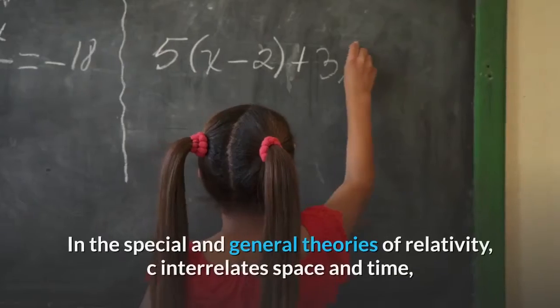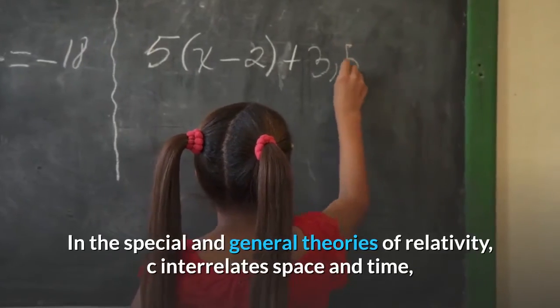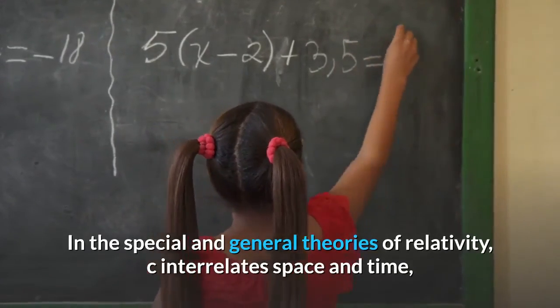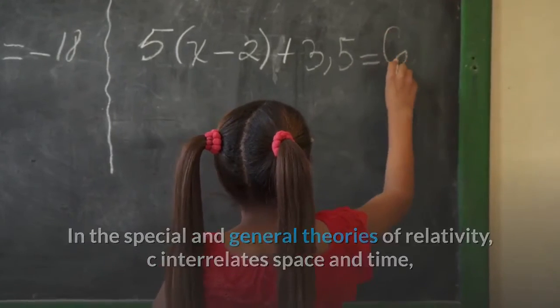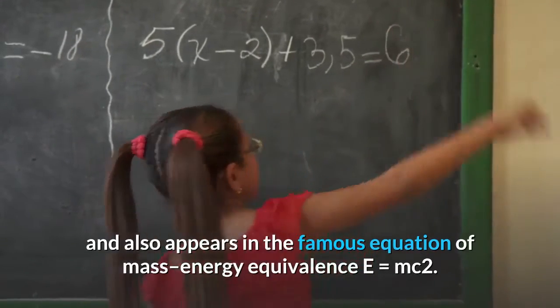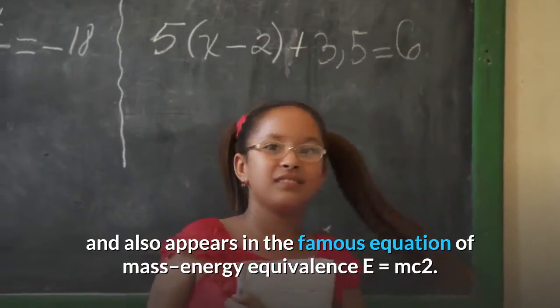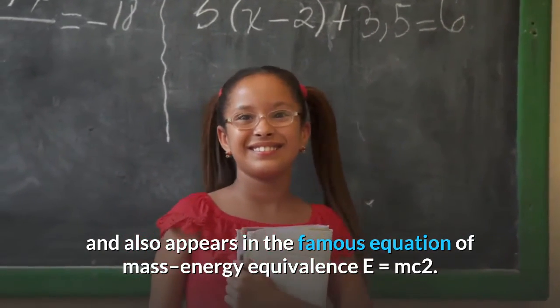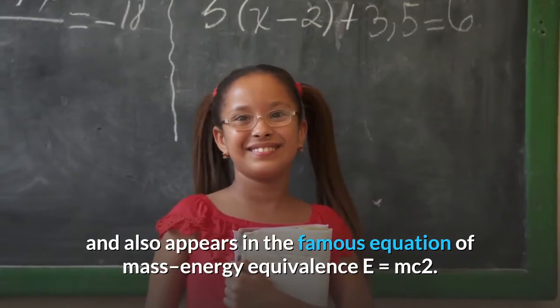In the special and general theories of relativity, c interrelates space and time, and also appears in the famous equation of mass-energy equivalence, E equals mc².